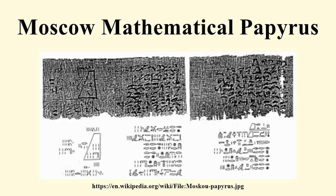Other mathematical texts from ancient Egypt include Berlin Papyrus 6619, Egyptian Mathematical Leather Roll, Lahun Mathematical Papyri, Rind Mathematical Papyrus, Papyrus Harris I, and the Rollin Papyrus.